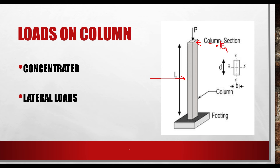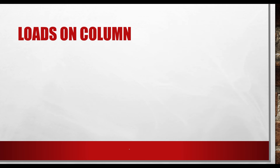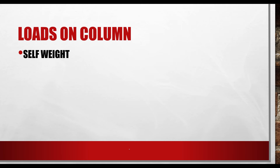Loads on columns can be derived from different forms, especially in a building. The first is the self-weight of the column itself. The self-weight is calculated from the density of the construction material — whether the column is made from steel or concrete. You take the density of the material and multiply by the area or volume to get the total self-weight of the column. This is usually in the form of a compressive force, acting as a concentrated load on the column member.